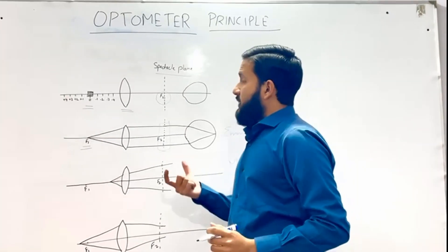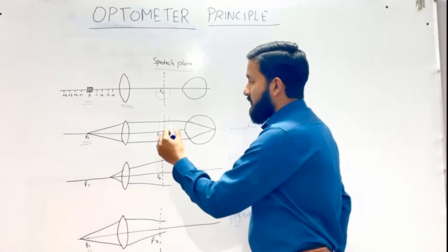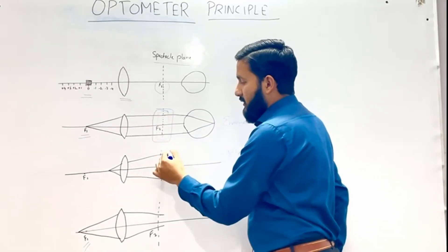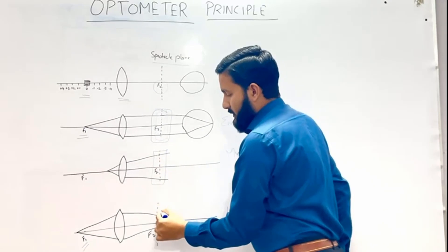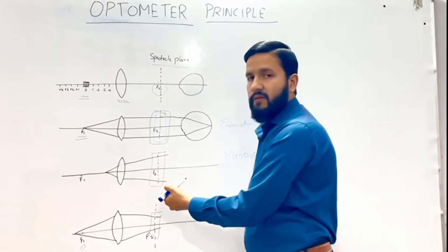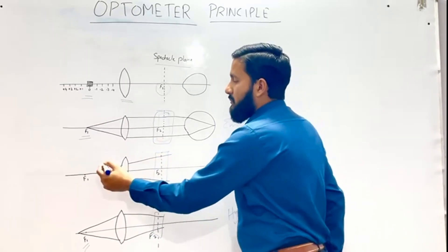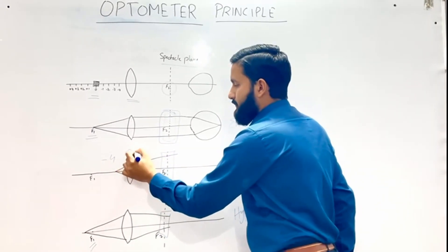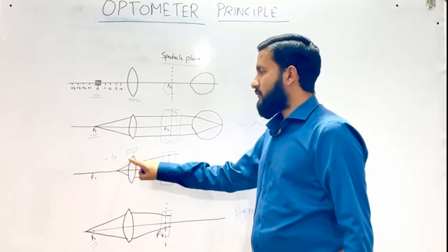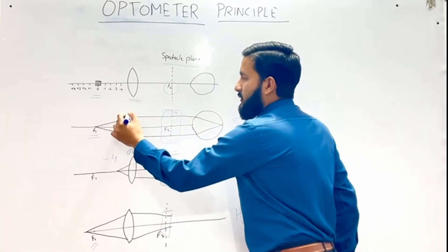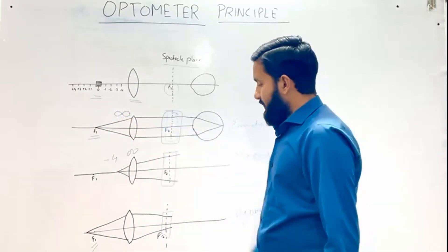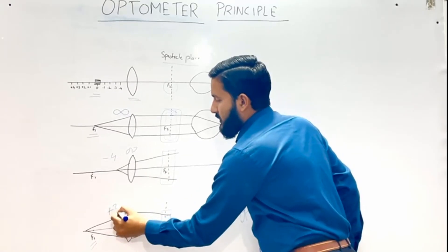The instrument measures the divergence of light at the spectacle plane and converts it into diopters. For example, if the light is diverging, the power may be minus four, so the instrument will show a refractive error of −4. If the error is null it shows zero power, and in the converging case it may show plus three.